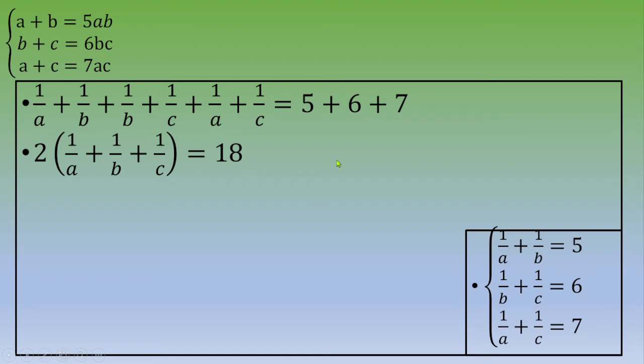Dividing both sides by 2, we get 1 over A plus 1 over B plus 1 over C equals 9.